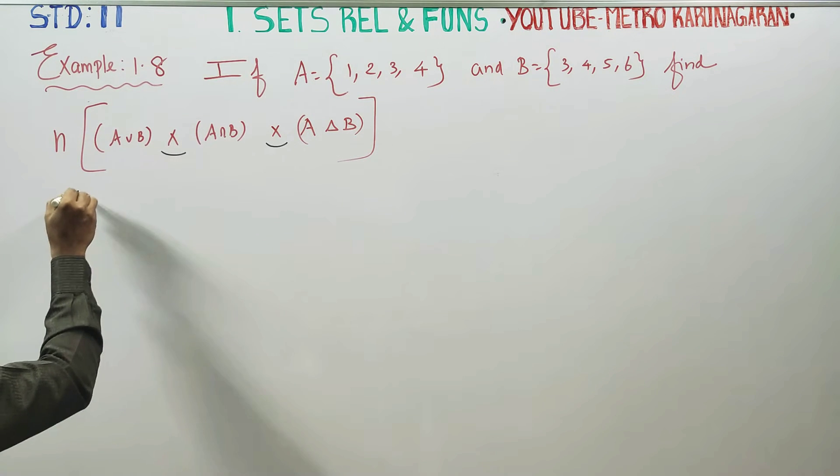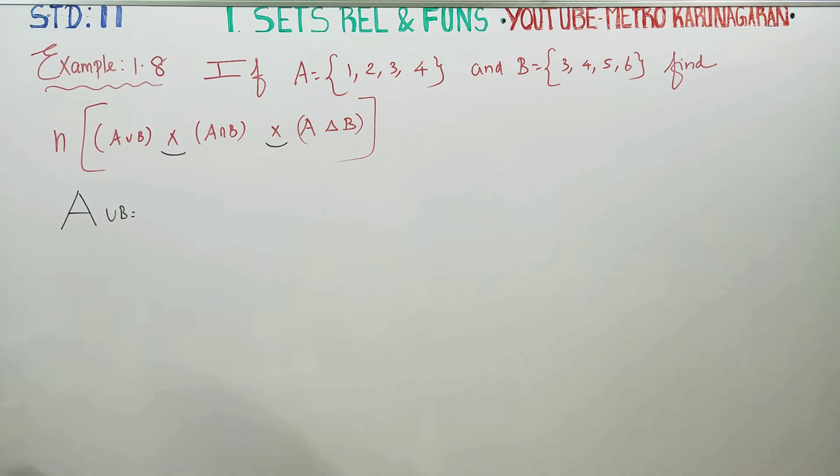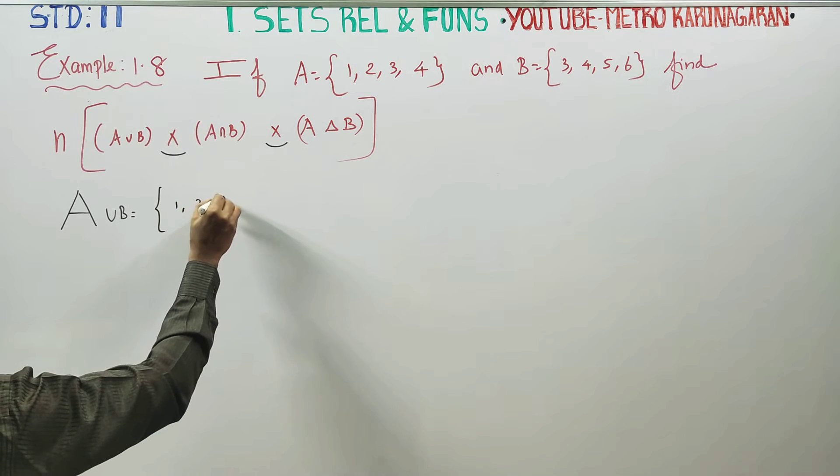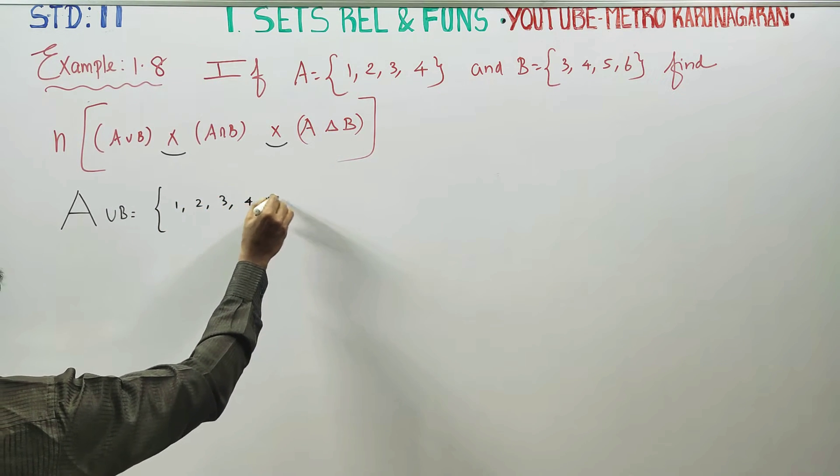First, we will go for A union B. We have to do the set union. Now, the elements are 1, 2, 3, 4, 5, 6.